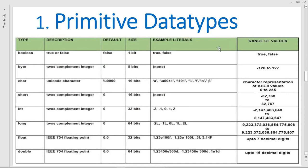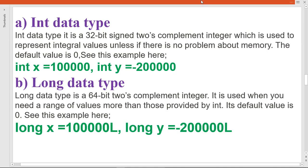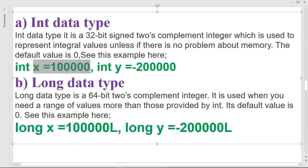Now we'll discuss each primitive data type one by one. Starting with int: the int data type uses a 32-bit two's complement to represent integral values. It can hold a positive number or a negative number. Long is also used to store integral values like int, but it is a 64-bit two's complement, so it stores larger numbers.